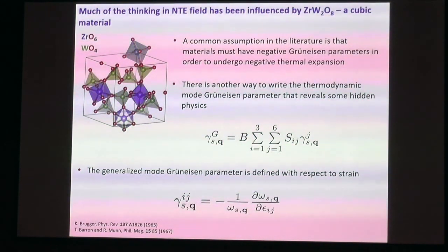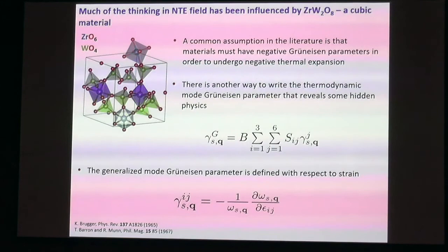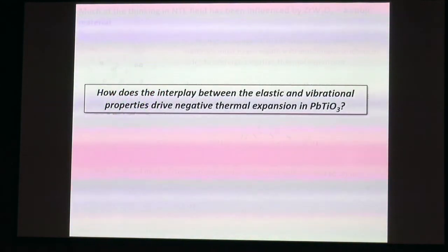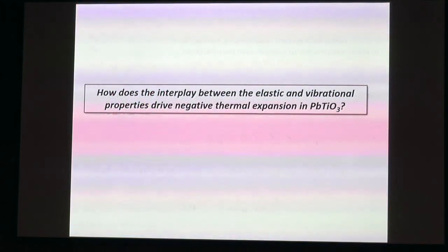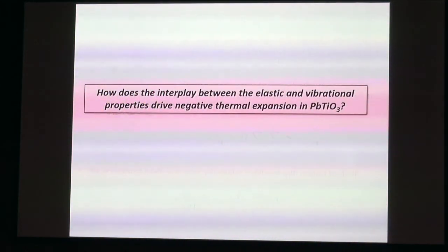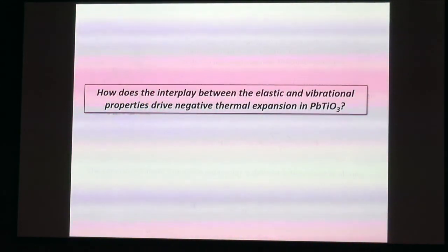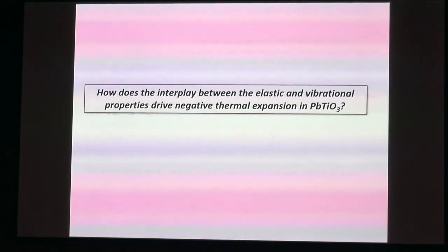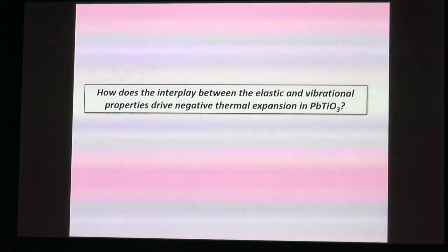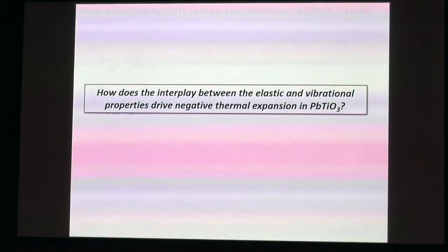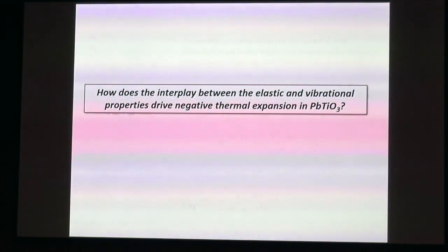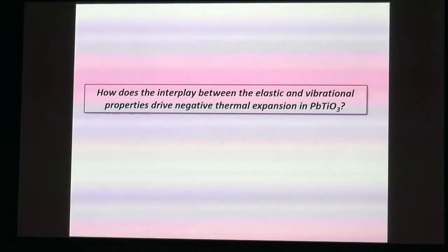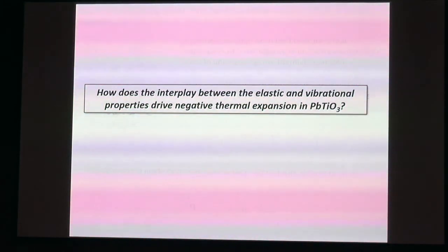Overall, the bulk thermodynamic Gruneisen parameter still needs to be negative, but it can be negative either because of the compliance tensor elements or the Gruneisen parameters. The question we wanted to answer was: what is this interplay? Is it mostly the elastic properties involved in thermal expansion, mostly the vibrational properties, or some very delicate balance between the two?